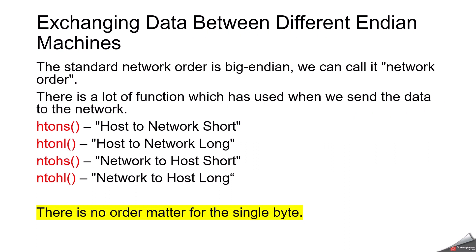When exchanging data between different endian machines you need to be careful. The standard network byte order is big-endian. There are standard functions used when sending data over a network: htons (host to network short), htonl (host to network long), ntohs (network to host short), and ntohl (network to host long). These functions help with program portability — no matter whether the program runs on a little-endian or big-endian machine, they always work correctly.